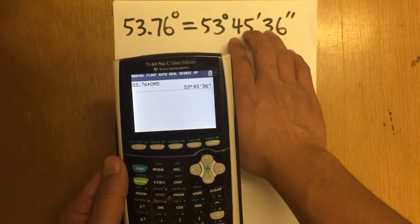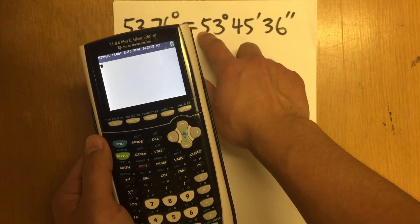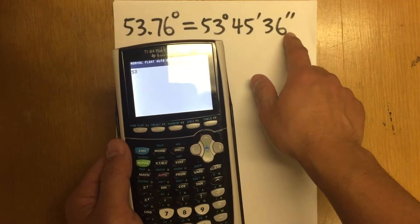And now, let me show you how to do this backwards. So let me clear this. First, I will have to enter 53 degrees. So let me press 53. But in fact, I have to enter the rest as well together.